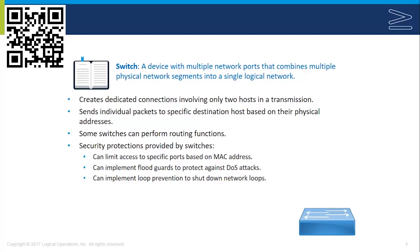Some switches are technically layer 3 switches — in fact, a lot of switches are — which means they can perform routing functions based on protocol addresses. They can also set up virtual LANs or VLANs, which have the ability to control routing from certain network segments to other network segments. Switches typically can perform some security functions as well: they can limit access to specific ports based on MAC addresses, maintaining a whitelist of acceptable MAC addresses so any device not on that list won't be allowed to connect. Switches may also have flood guards to protect against denial of service attacks like SYN floods and ping flood attacks, and they can implement loop prevention to shut down network loops, which can cause a denial of service condition.